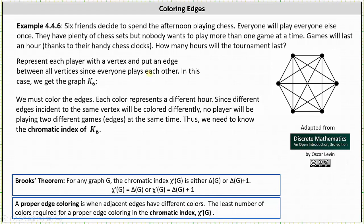We must color the edges. Each color represents a different hour since different edges incident to the same vertex, meaning adjacent edges, will be colored differently. No player will be playing two games at the same time. Thus we need to know the chromatic index of K₆. To help us do this, we will use Brooks' Theorem.